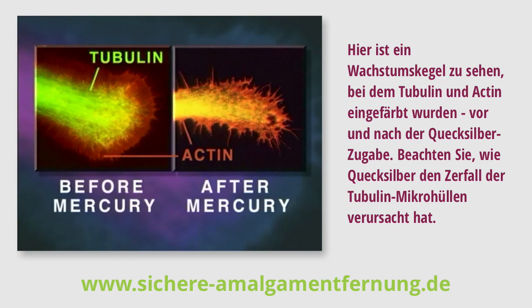Shown here is a neurite growth cone stained specifically for tubulin and actin, before and after mercury exposure. Note that the mercury has caused disintegration of tubulin microtubule structure.